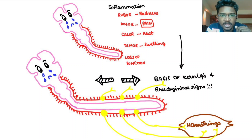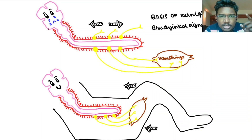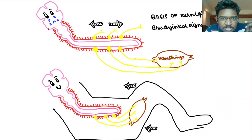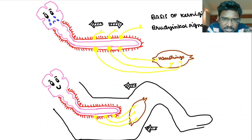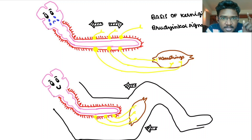Meninges are inflamed. In meningitis, the nerve roots supplying the hamstring muscles will be irritated so that our knee will be flexed and the stretched meninges is de-stretched. This is the basis going on here.